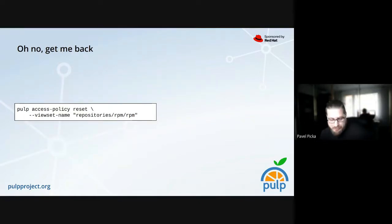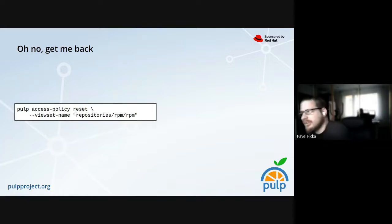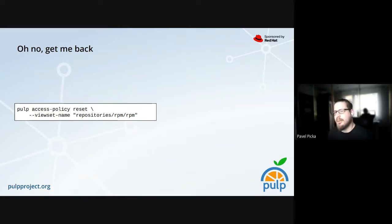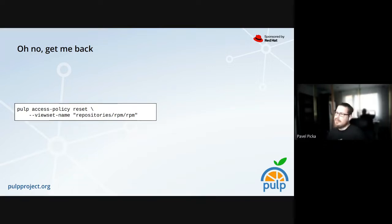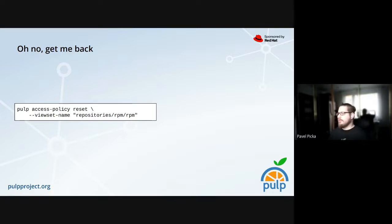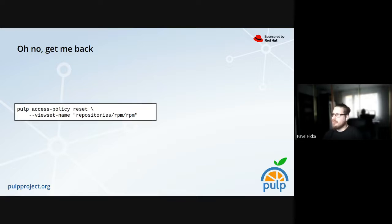That's exactly why there is object-level role assignment — sometimes you don't want to expose all your repositories, maybe you have internal ones. When you're working with role assignments and something goes wrong — you specify a wrong permission or something breaks — there is a simple way to reset. This command resets back to the defaults, including the creation hooks. Even if you've mixed up permissions and something is broken, this simple command restores defaults and you can start over.